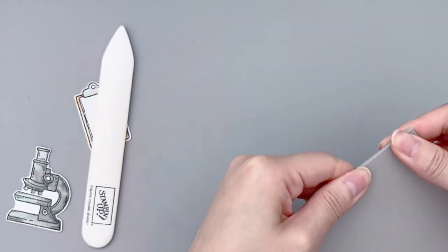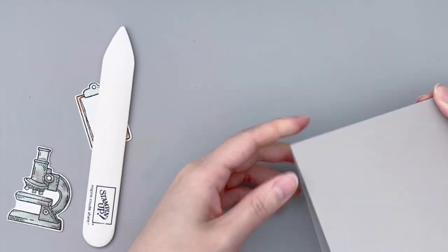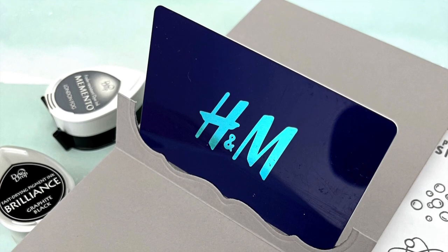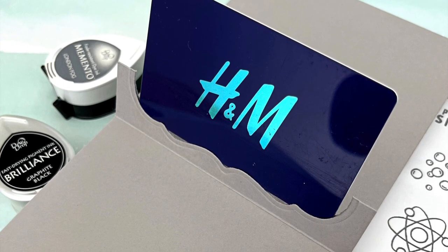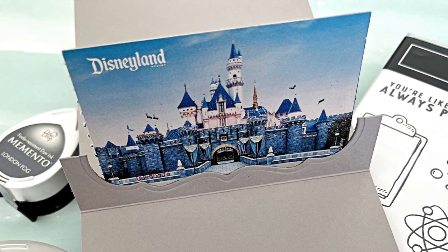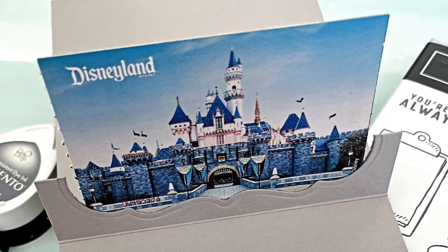The reason why I'm not applying adhesive to the entire flap panel is because you want to leave some room for the gift card to slide in. If you glue the entire thing shut, you won't be able to slide any tickets or even a Polaroid photo inside the slot.